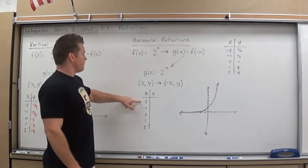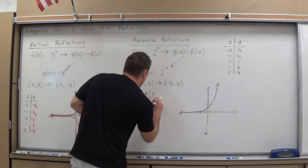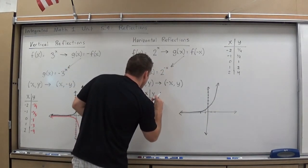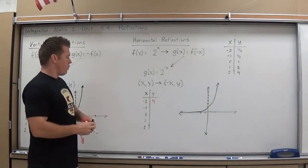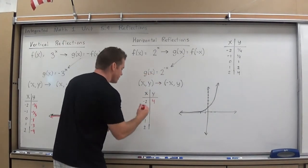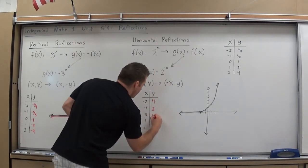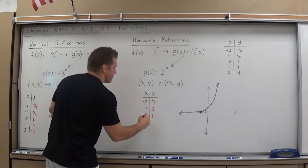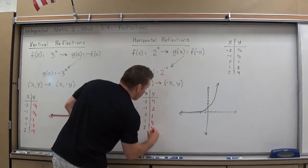Negative 2 to the negative x power becomes positive 2, which makes this 4. 2 to the negative negative 1, change it to a positive 1, which makes it 2. 2 to the 0 would still be 1. 2 to the negative 1 is 1 half. 2 to the negative 2 is 1 fourth. And I can plot those just like that.